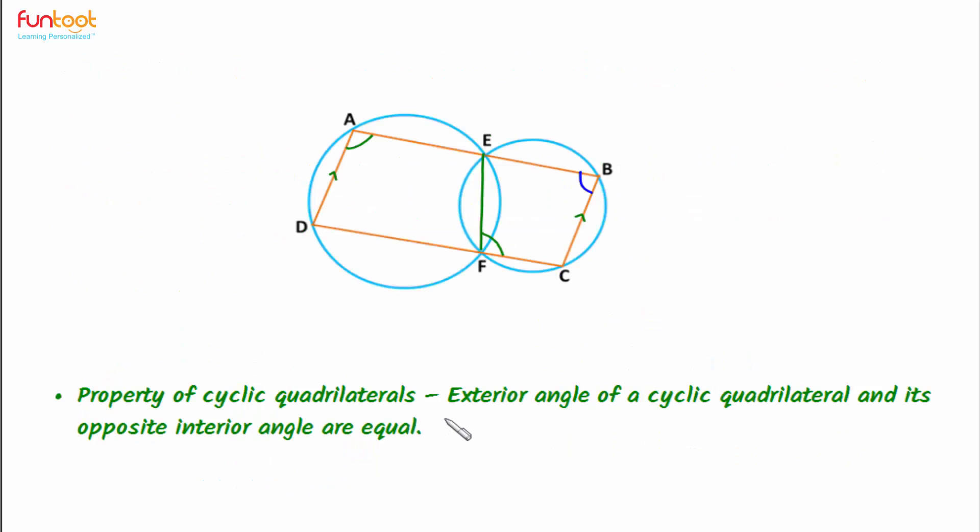So for solving this problem, we used the property of cyclic quadrilaterals that the exterior angle of a cyclic quadrilateral and its opposite interior angle are equal.